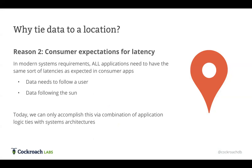The second reason people like to tie data to location is consumer expectations on enterprise applications today. My parents use Facebook, we all use Instagram — we have these apps and we have instant access to data all the time in our consumer lives. Enterprises are being forced to make sure their applications have the same sort of latency expectations. A lot of organizations want data to follow a user to make sure it is close to them, so they can shrink latencies, increase performance, and meet the kind of expectations that consumers of these applications have.